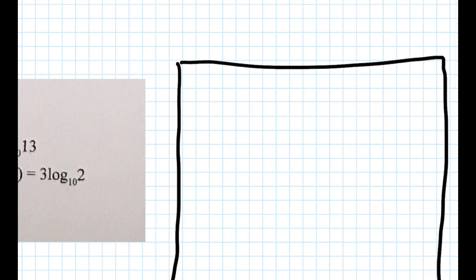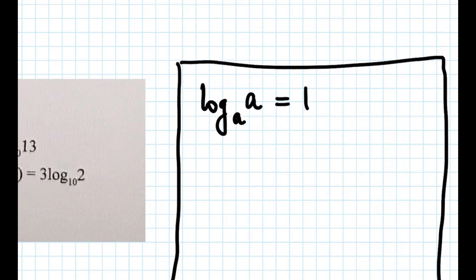So first we are looking at log base a — a is always equal to 1. So if the base and the number are the same, then they equal 1. For example, log base 10 of 10 is equal to 1.